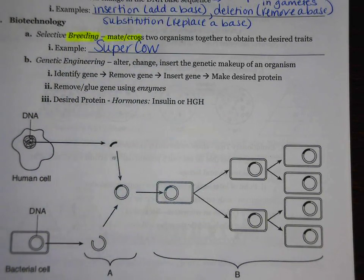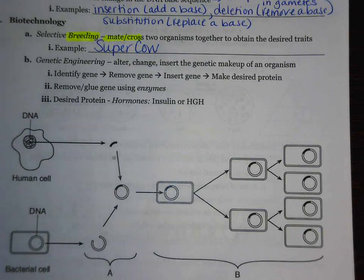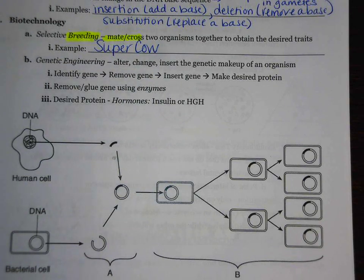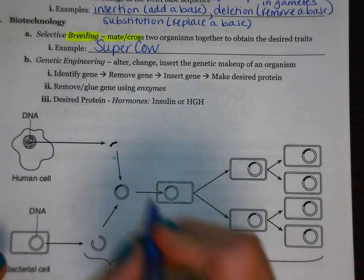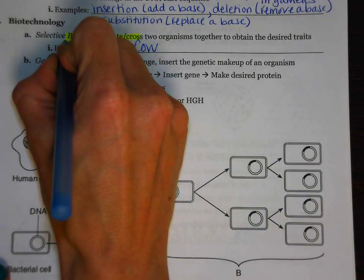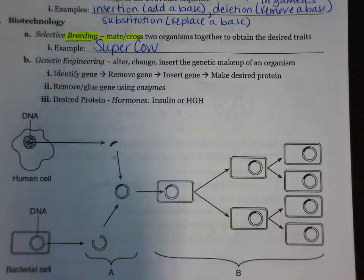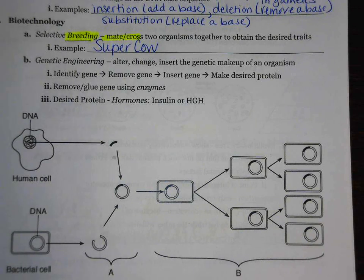Hi guys, let's take out our review packet and turn to the page on biotechnology. The first topic that we're going to talk about is selective breeding. Selective breeding is when you mate or cross two organisms together to obtain the desired traits.